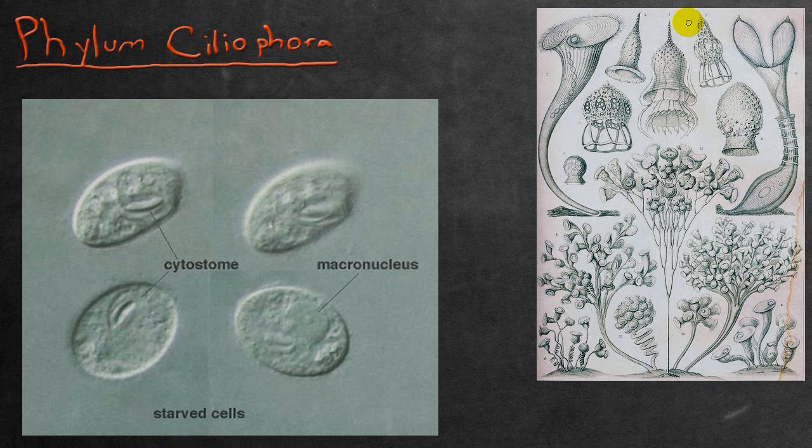Ciliates also characteristically possess at least two nuclei: a polyploid macronucleus and one or more diploid micronuclei, which are more difficult to see in specimens, but they would look something similar to these small minor bumps you see here.